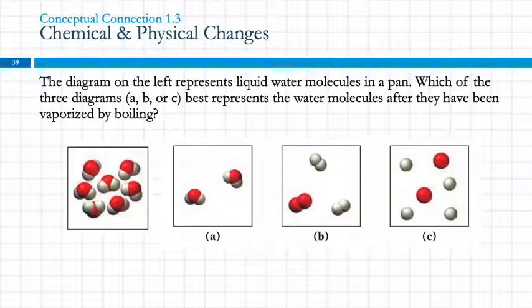Here's another one, more conceptual. So the diagram on the left, that's this one over here, represents liquid water molecules in a pan. Which of the three diagrams, A, B, or C, best represents the water molecules after they've been vaporized by boiling?